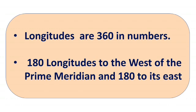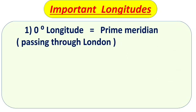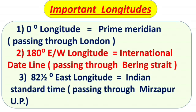There are 360 longitudes in total — 180 to the east and 180 to the west of the prime meridian. Now let's talk about some important lines of longitude. First, zero degrees longitude is the prime meridian, passing through Greenwich, London. Second, 180 degrees East/West longitude is the International Date Line, passing through the Bering Strait. Third, 82.5 degrees East longitude is Indian Standard Time, passing through Mirzapur, Uttar Pradesh.